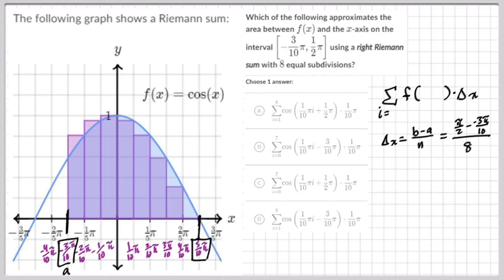We have b which is π/2, 1/2π, minus the a which is -3π/10, divided by eight. We can figure this out easy peasy. We need common denominators, so we'll make this a 10 and put the 5 there, so I get 8π/10.